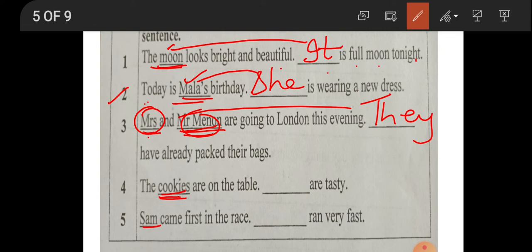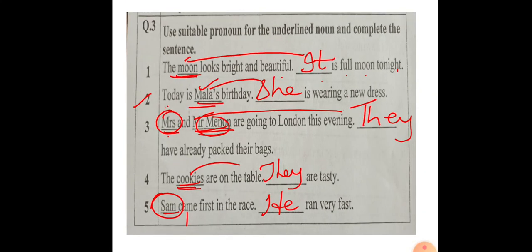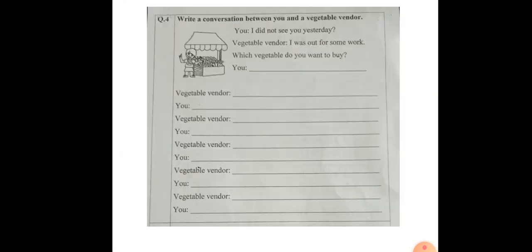'Sam came first in the race' — we are talking about only one person, so we use 'he'. He ran very fast. Sam is the name of a boy. Now I want you to write the next part on your own. I'm not going to discuss it with you right now.